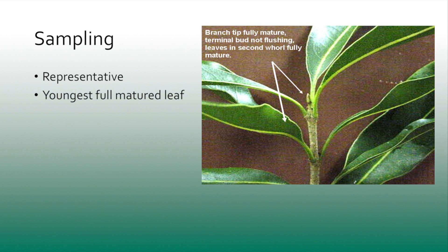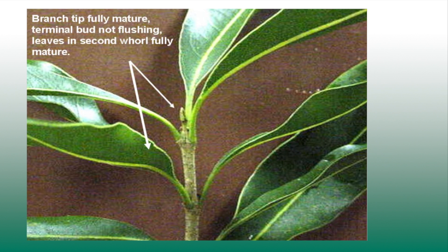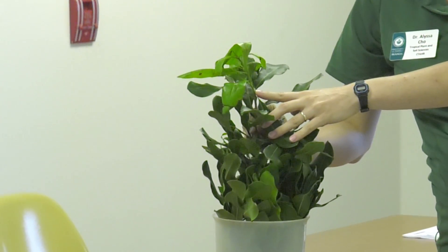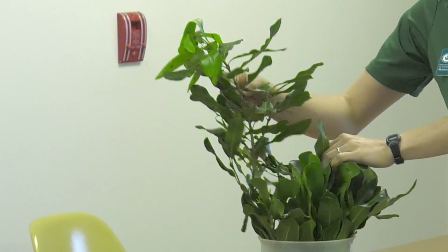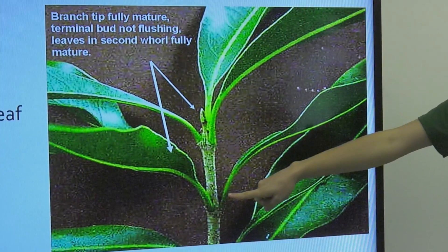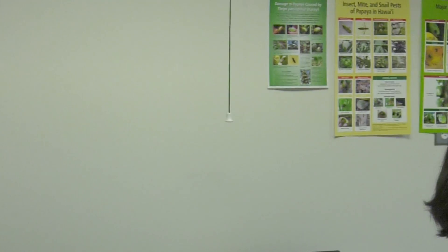For macadamia nut, it's a little bit complicated. You need to have a mature branch that is at a resting state — the bud is not flushing, meaning it's not just putting out new growth. We can see here that this branch is bright green, which is an example of a newly flushing branch that we would not want to sample from, because it would give us a biased reading. For macadamia, you want to take it from the second whorl below that resting point. It depends on the crop.